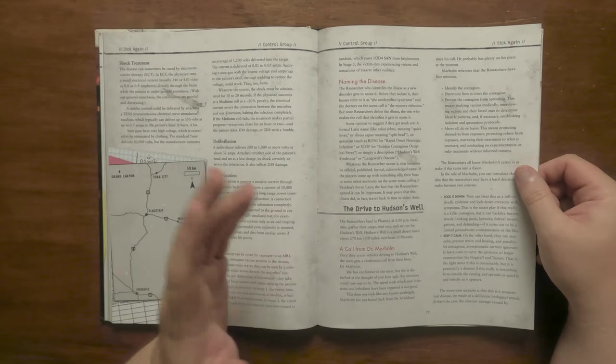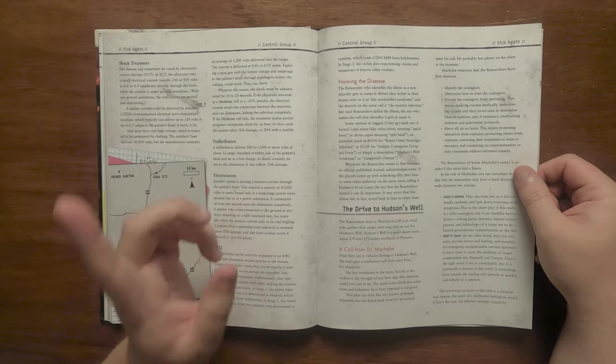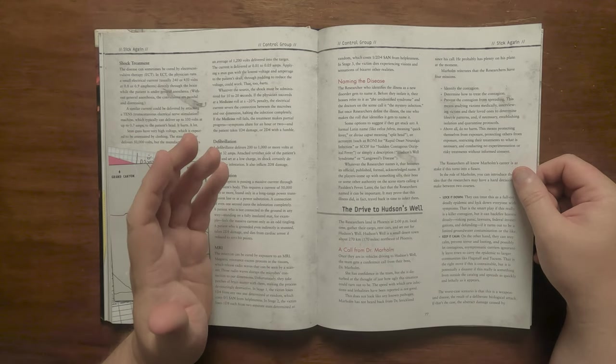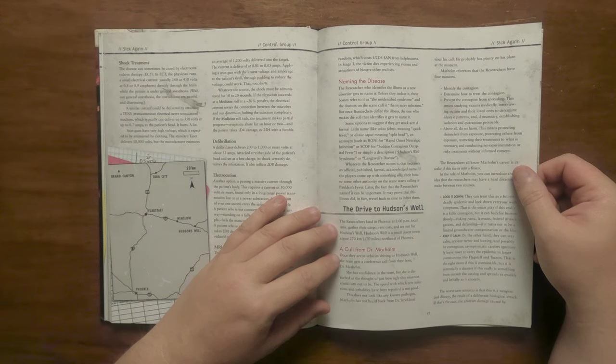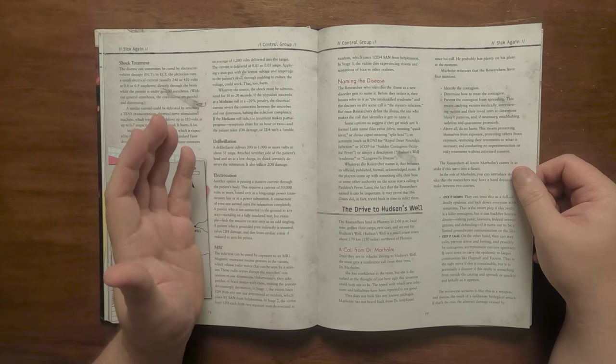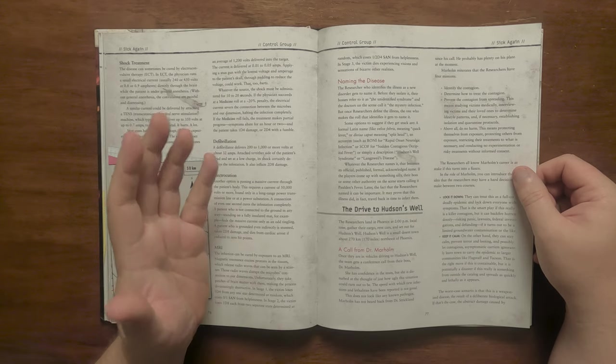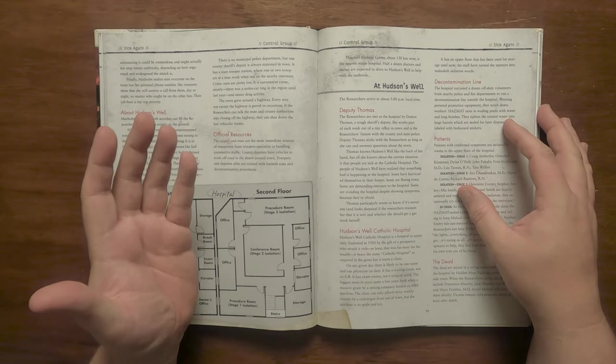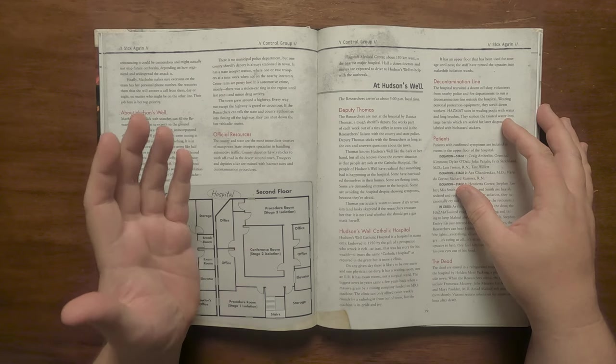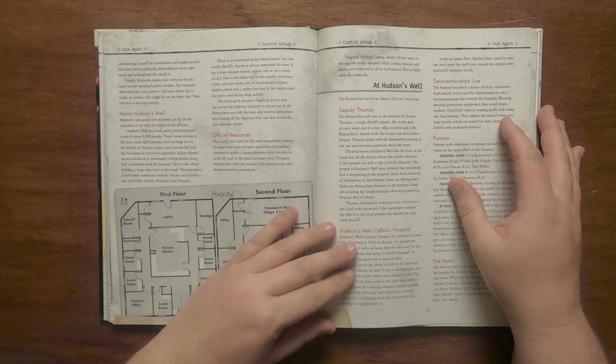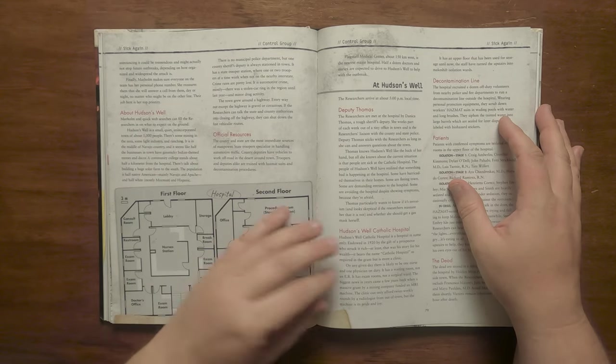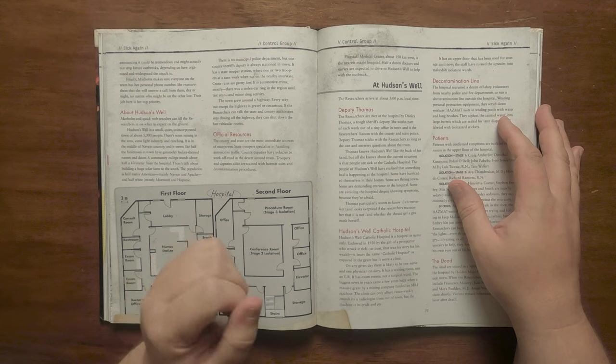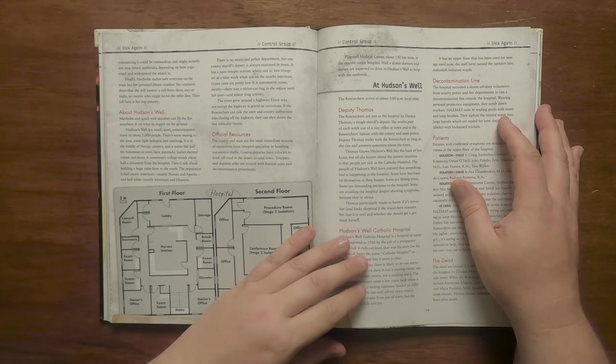It does suggest that Dr Marholm could offer two courses of action that the researchers could take, that of either locking it down like a full epidemic or keeping it calm to stop a panicked reaction. The obvious worst case scenario is that it is a weaponised pathogen which would imply an organised attack. She can also fill them in on Hudson's Well, though a web search can also provide info. It's a small town of around 5,000 people, with light industry, mining and ranches. It's Navajo country and has quite a gimmicky Indian theme about it. It has a community college and a hospital. The population is around 50% Native American, Navajo and Apache and the other half white Mormons and Hispanics. There's no police department though a county sheriff deputy is always here. Crime is fairly minor.